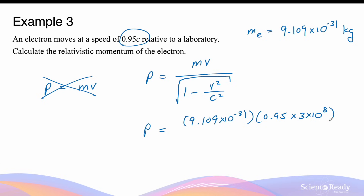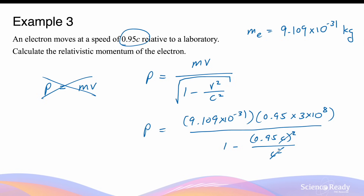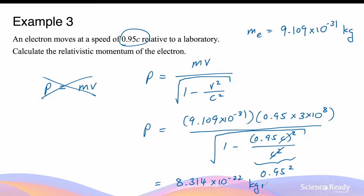In the numerator we need to multiply 0.95 by the actual speed of light, converting it into meters per second, because if we kept it in terms of c we couldn't cancel c with any other term there. In the denominator, however, we can keep the velocity in terms of c as 0.95c squared divided by c squared, so the c squared cancels. This gives a momentum value of 8.314 times 10 to the minus 22 kilograms meters per second.